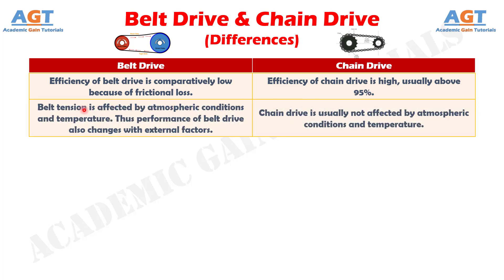Number 7: Belt tension is affected by atmospheric conditions and temperature. Thus, performance of belt drive also changes with external factors. Whereas, chain drive is usually not affected by atmospheric conditions and temperature.